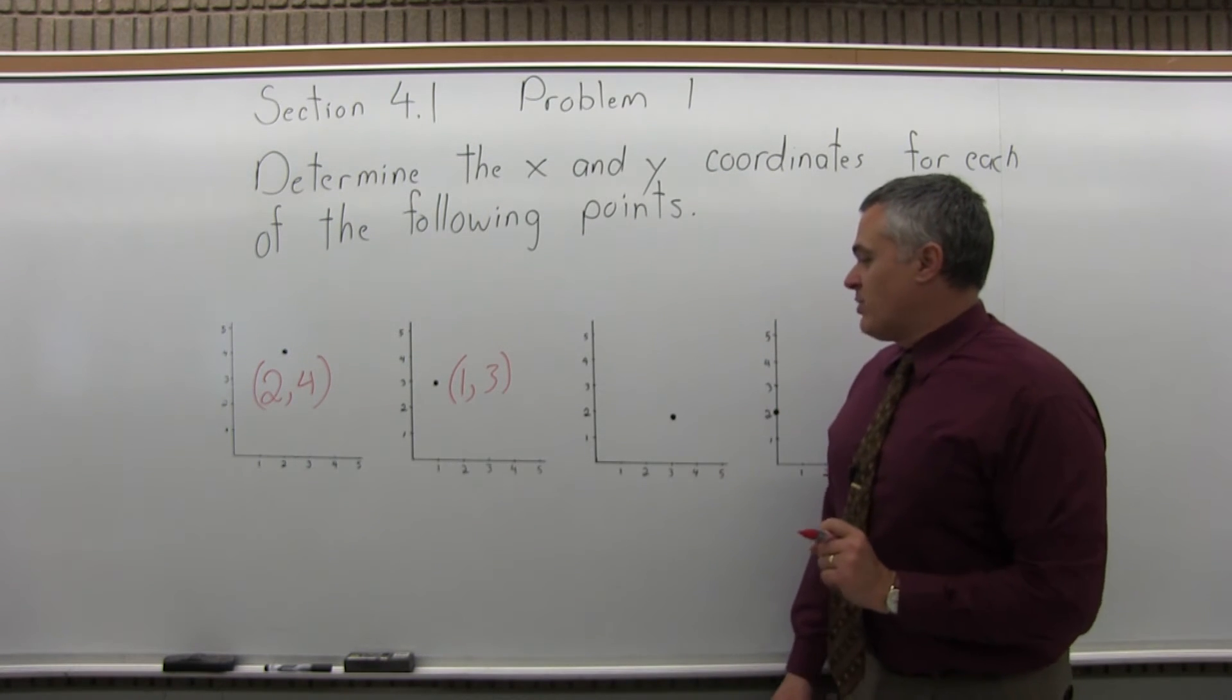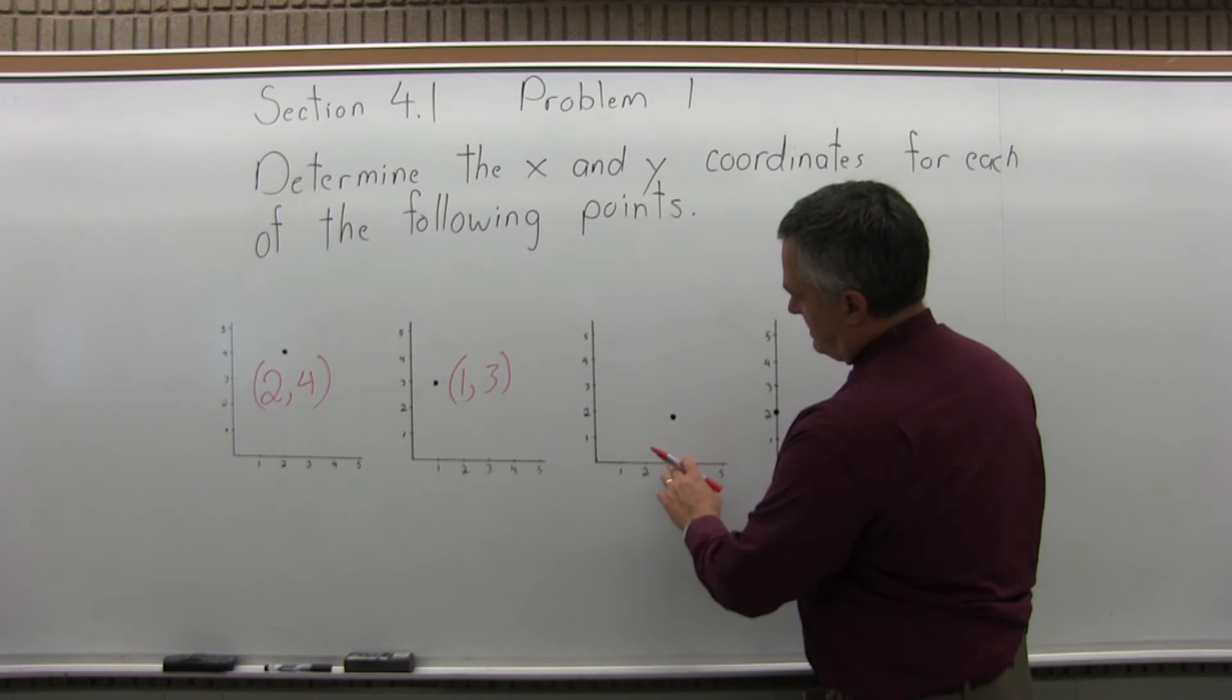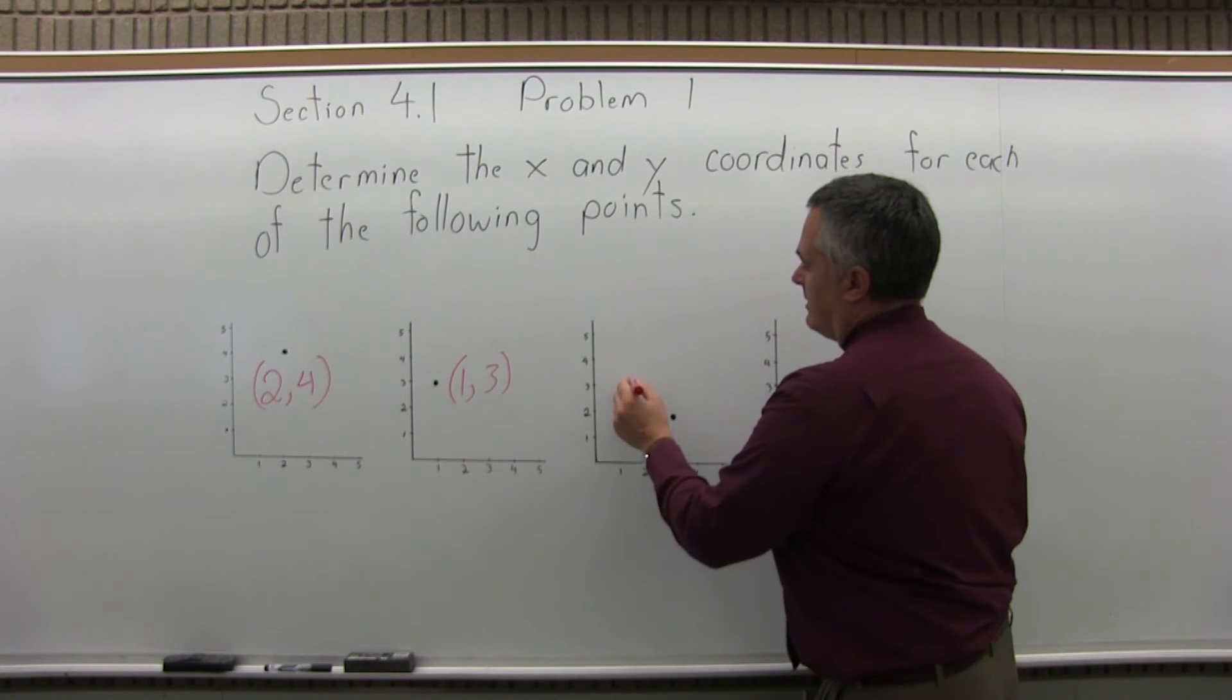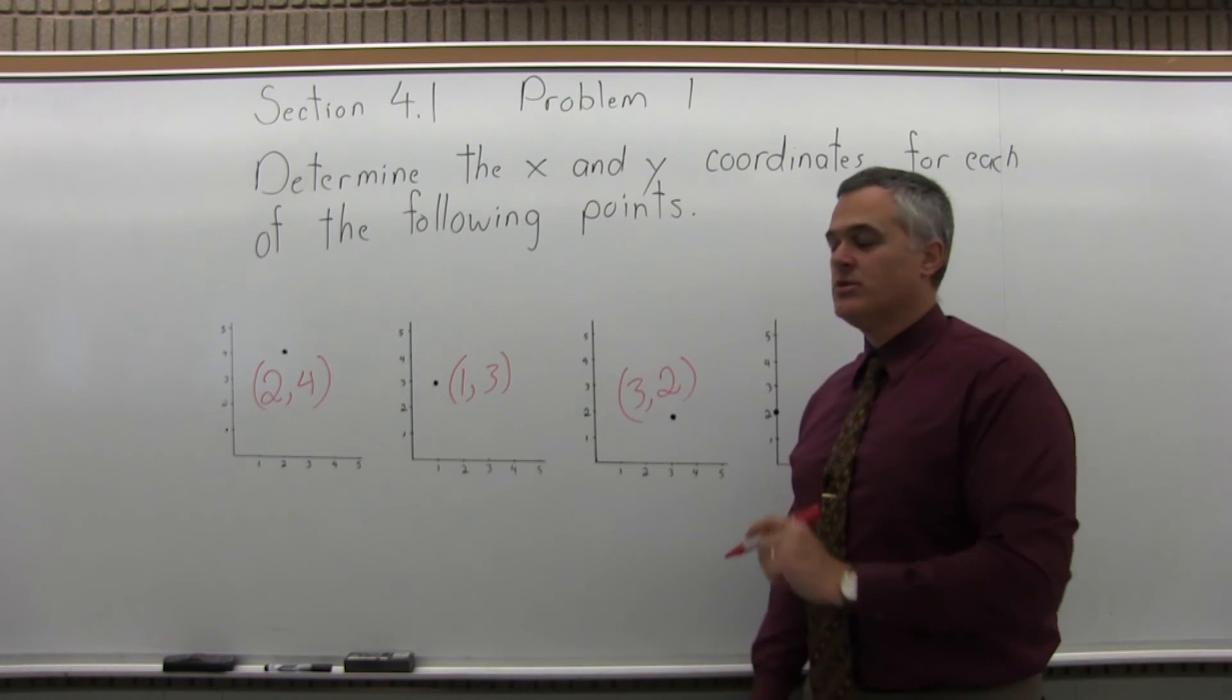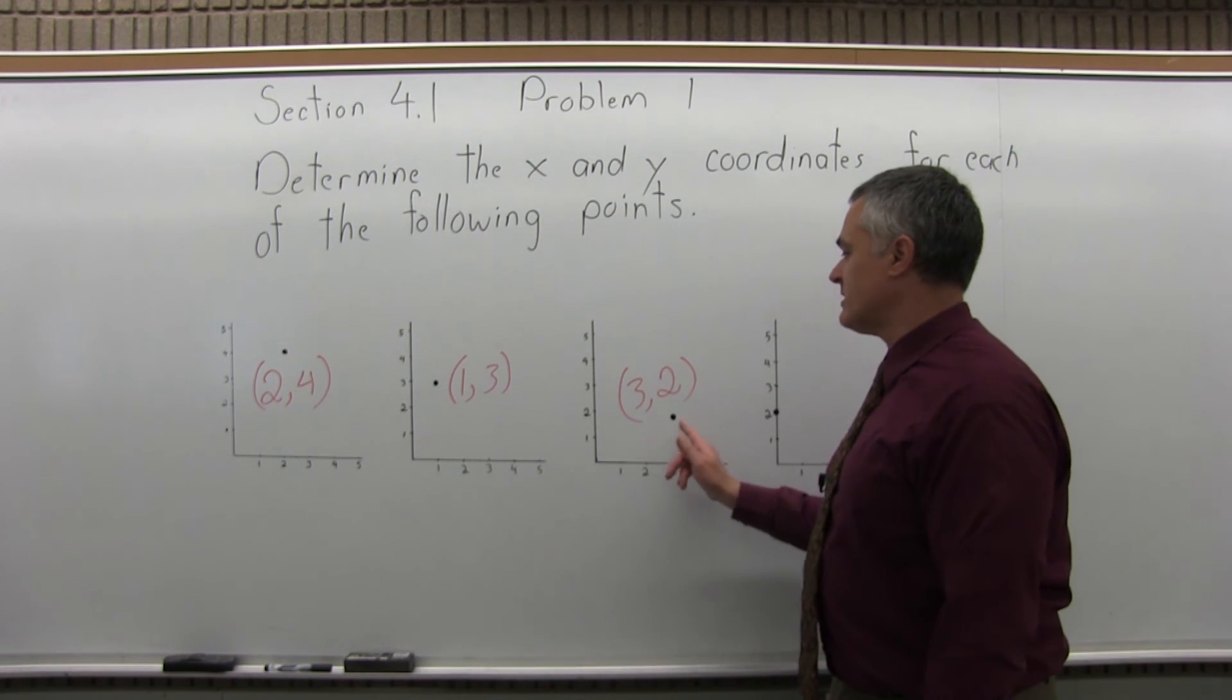The next point, if we look, it seems that we have gone over 3 and up 2. So the third point has the coordinates 3 comma 2, over 3 first and then up 2.